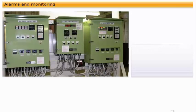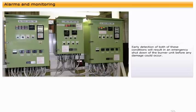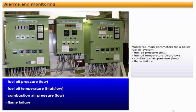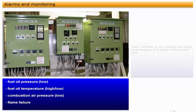High steam pressure can lead to rupture of the boiler. Early detection of both of these conditions will result in an emergency shutdown of the burner unit before any damage could occur. The list shows the main parameters that are monitored for a boiler fuel oil system. Fault condition of any of these will result in emergency shutdown of the burner unit.